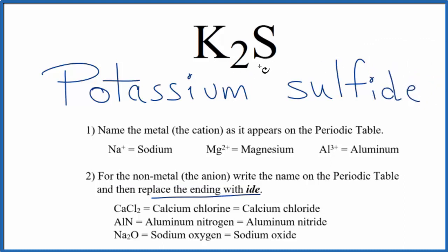So the name for K2S is potassium sulfide. If you were given the name and asked to find the formula, you'd need to realize that potassium has a 1 plus ionic charge. Each one of the potassiums has a 1 plus ionic charge. The sulfur has a 2 minus ionic charge.